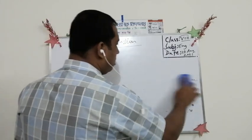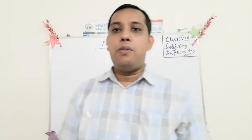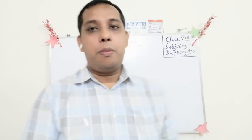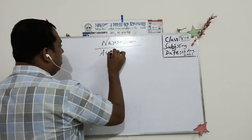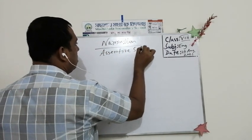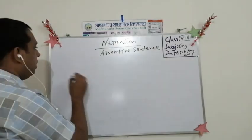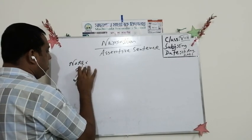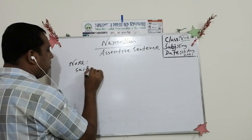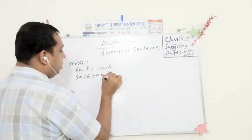In the last class we talked about the five sentence types. Today we are going to start assertive sentences. Please note: 'said' equals 'said,' and if it is 'said to,' it will become 'told' in indirect narration.